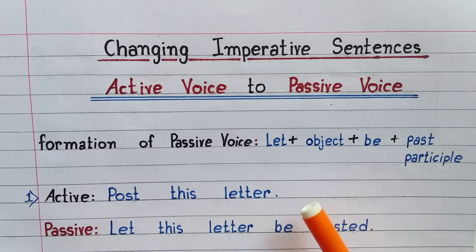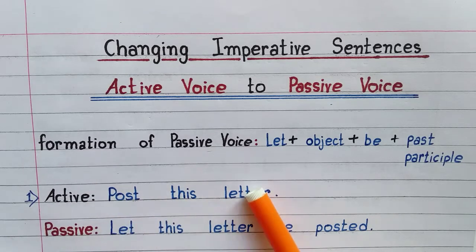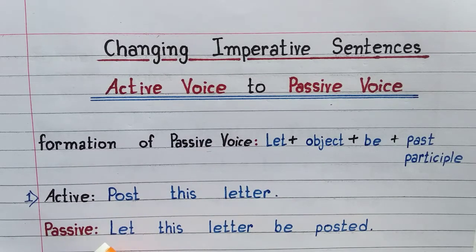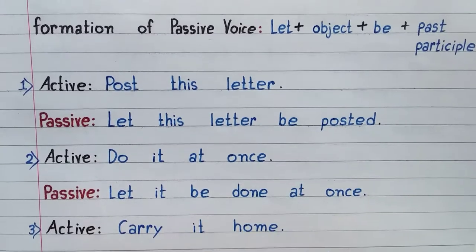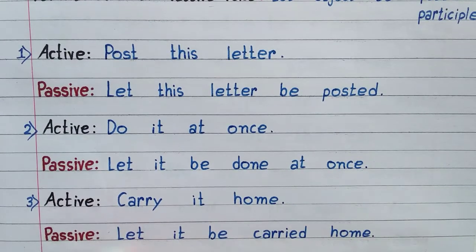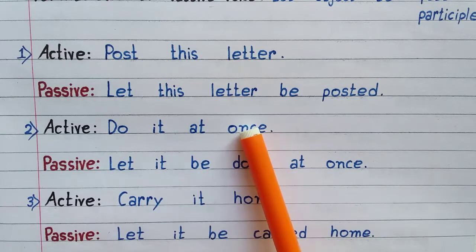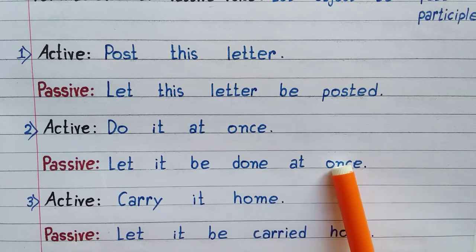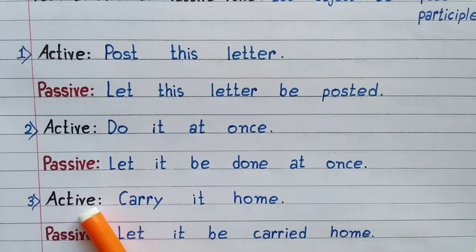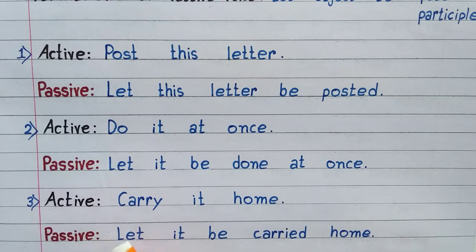Let us look at the first example. Active: post this letter. Passive: let this letter be posted. Number two — Active: do it at once. Passive: let it be done at once. Number three — Active: carry it home. Passive: let...